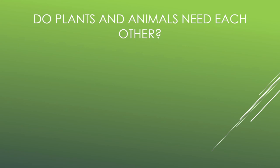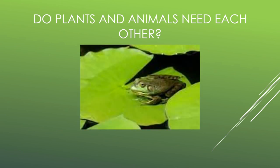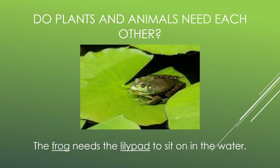So now let's think more about that. Do plants and animals need each other? Take a look at this picture. This is a frog on a lily pad. Does the frog need the lily pad? Let's think about that. If the frog didn't have the lily pad, where would it sit? Frogs sit on lily pads and catch flies. Flies are their main source of food. If it didn't have a lily pad to sit on, where would it catch its dinner? The frog needs the lily pad to sit on in the water. So the frog is depending on the lily pad to survive.